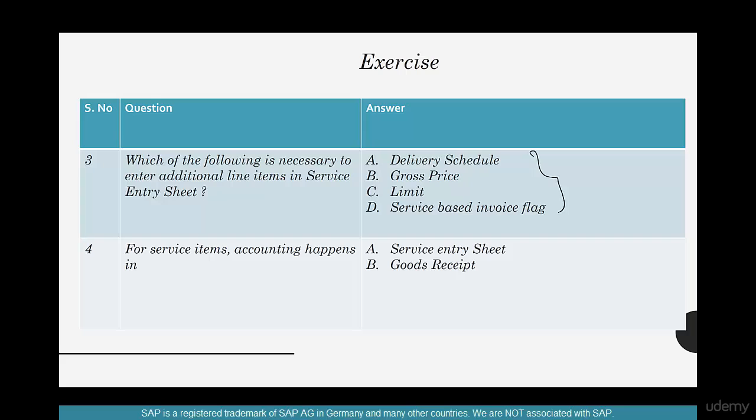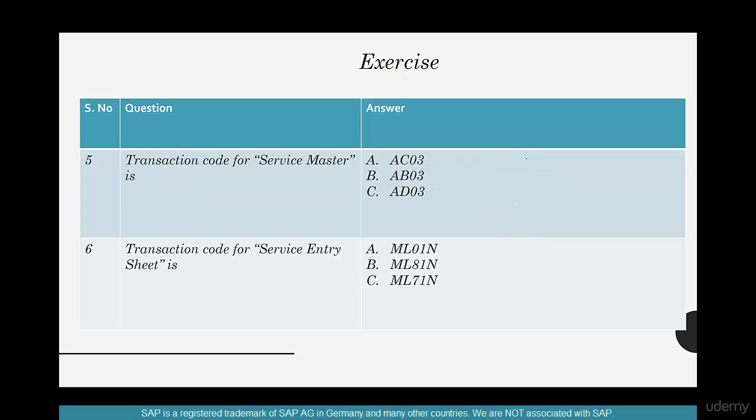Number four: for service items, accounting happens when? Is it in goods receipt or service entry sheet? Number five: transaction code for service master is which one of these?